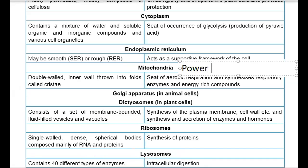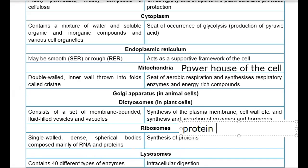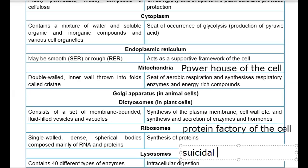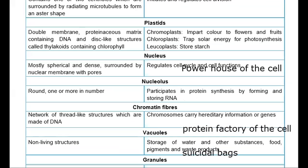Lysosomes are known as suicidal bags. They can clean the cell by digesting waste material and even destroy the cell itself — which is why they are called suicidal bags.